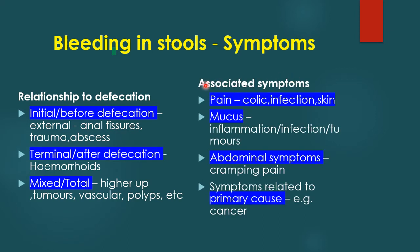Associated symptoms include pain — colicky pain due to infection or skin lesions; blood mixed with mucus, especially in inflammatory conditions, infection, and tumours; abdominal cramping due to blood in the intestinal lumen. Symptoms related to the primary cause are also relevant — for example, cancer tends to present with constitutional symptoms of weight loss and lethargy.